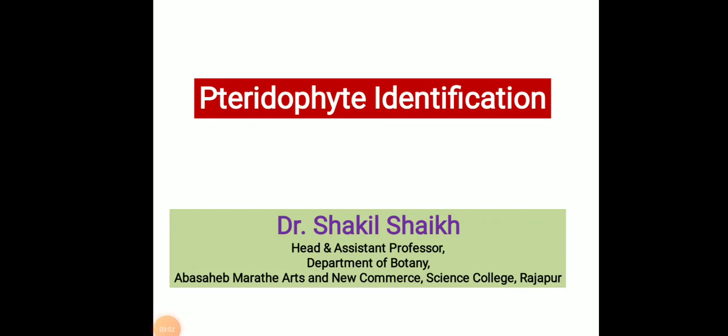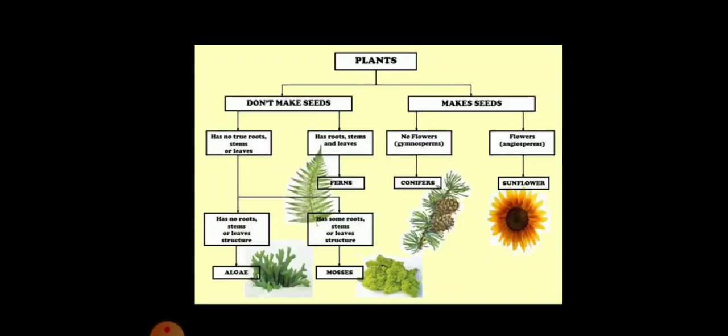Hi friends, this is Dr. Shakil Shek and we are going to discuss how to identify the pteridophytes. As we know, the plant system has a simple classification based on the availability of seeds — those plants which prepare seeds and those which cannot make seeds: flowering and non-flowering plants. Those plants which are making seeds also come under two categories: plants which produce flowers, known as gymnosperms.